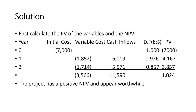Table columns: Year, Initial Cost, Variable Cost, Cash Inflows, Discount Factor at 8%, PV. Year Zero: Initial Cost negative $7,000; discount factor is 1, giving PV of negative $7,000. Year One: discount factor at 8% is 0.926; variable cost $2,000 × 0.926 = $1,852; cash inflows $6,500 × 0.926 = $6,019; PV = $4,167 (being $6,019 minus $1,852).